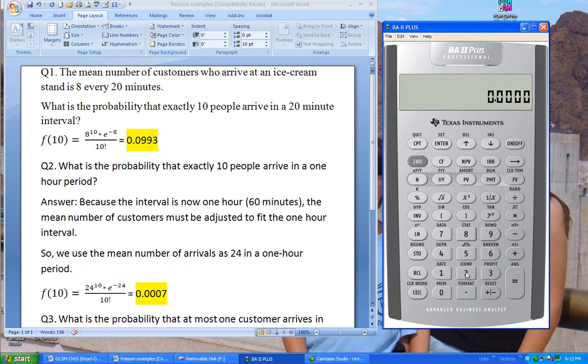Let's go through the math quickly on the calculator. We go 24, change it to a negative, second function natural log button, multiply it by, open parentheses, 24 raised to the power of 10, close parentheses, divide by 10 factorial, second function, factorial, equals 0.0007.